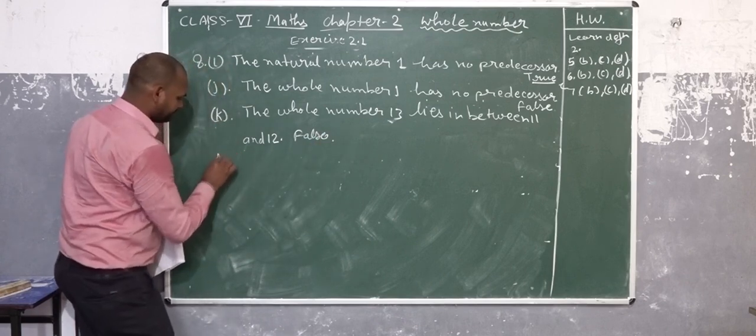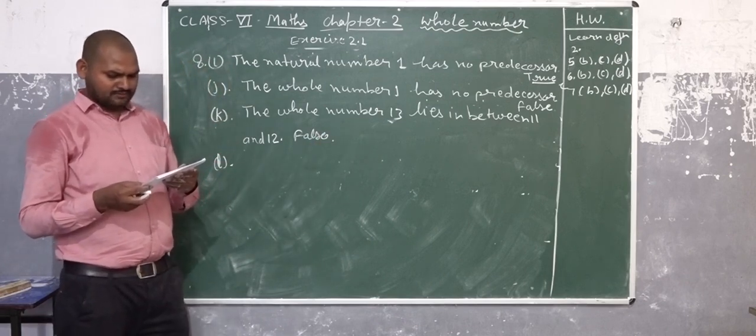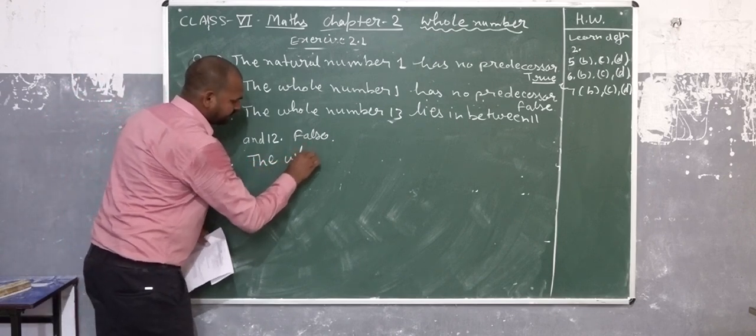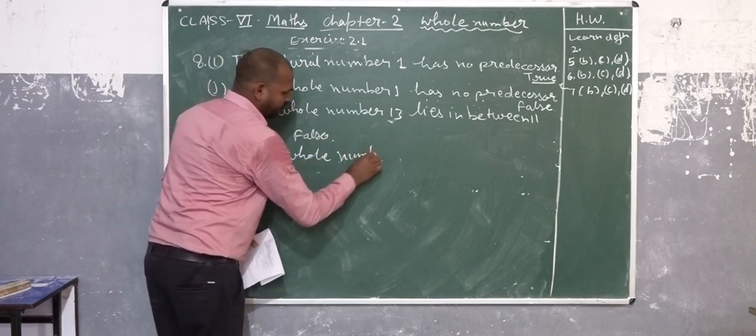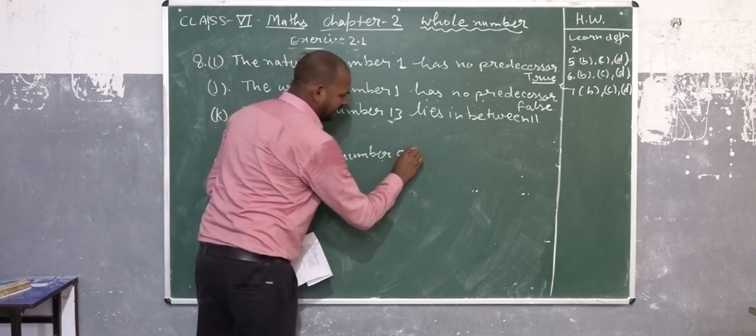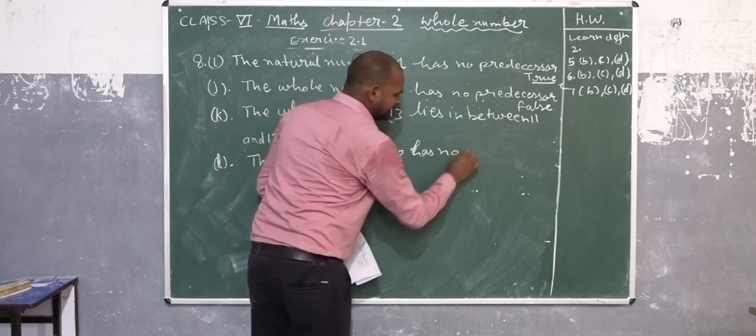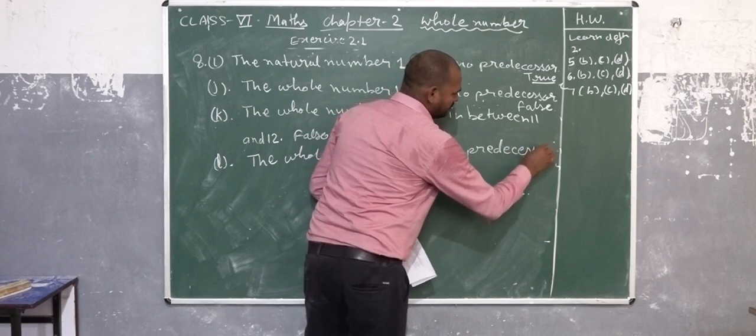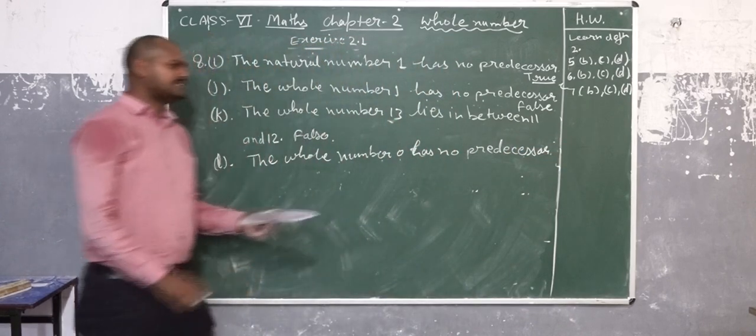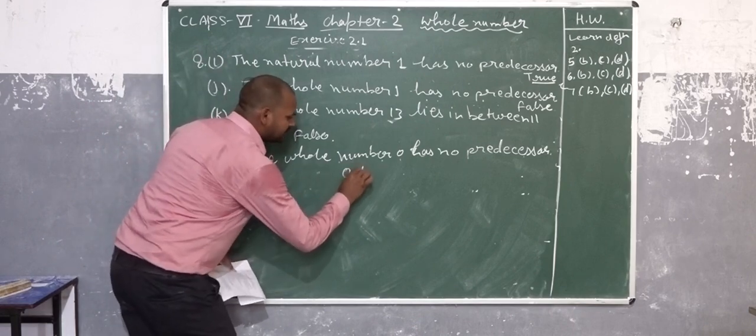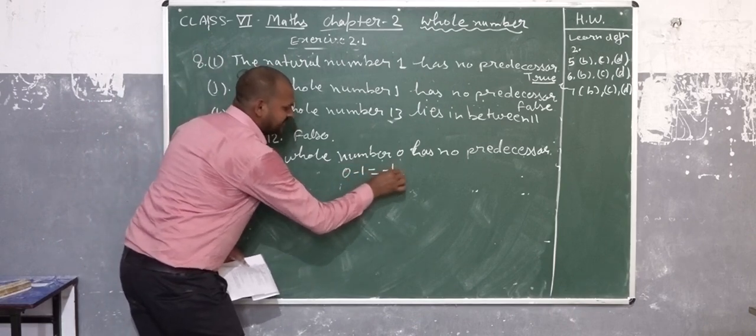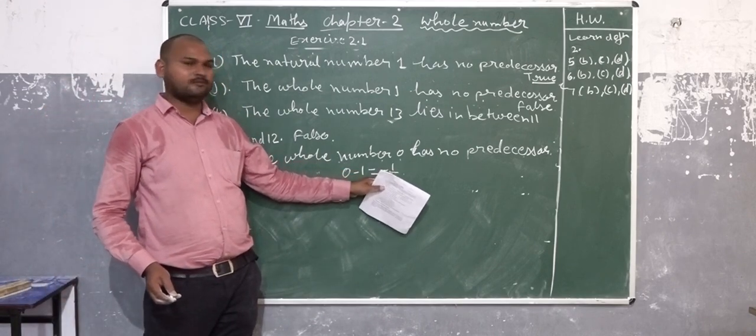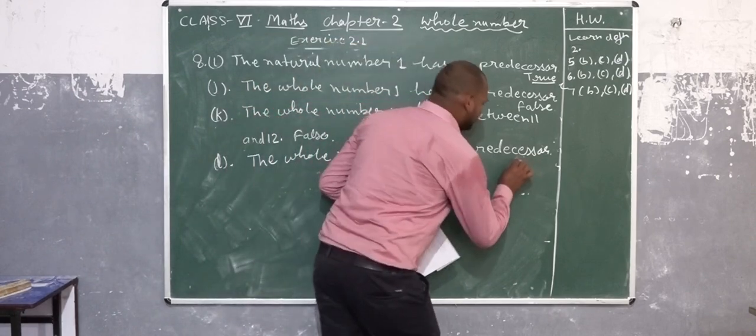All right. The whole number zero has no predecessor. The whole number is zero, no predecessor. Just refine. The predecessor of zero is zero minus one, and minus one is not a whole number. So zero has no predecessor.